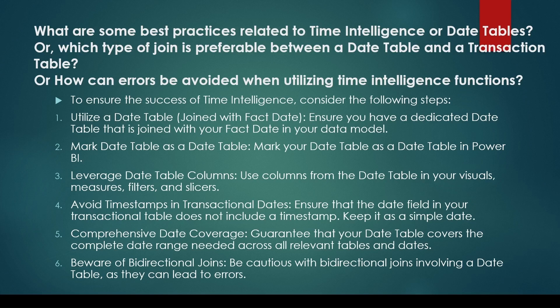Bi-directional join consideration: be cautious about bi-directional joins. These joins can inadvertently filter your date table, potentially causing missing or irregular date sequences for time intelligence functions. To avoid this, stick to single-directional joins to the date table.